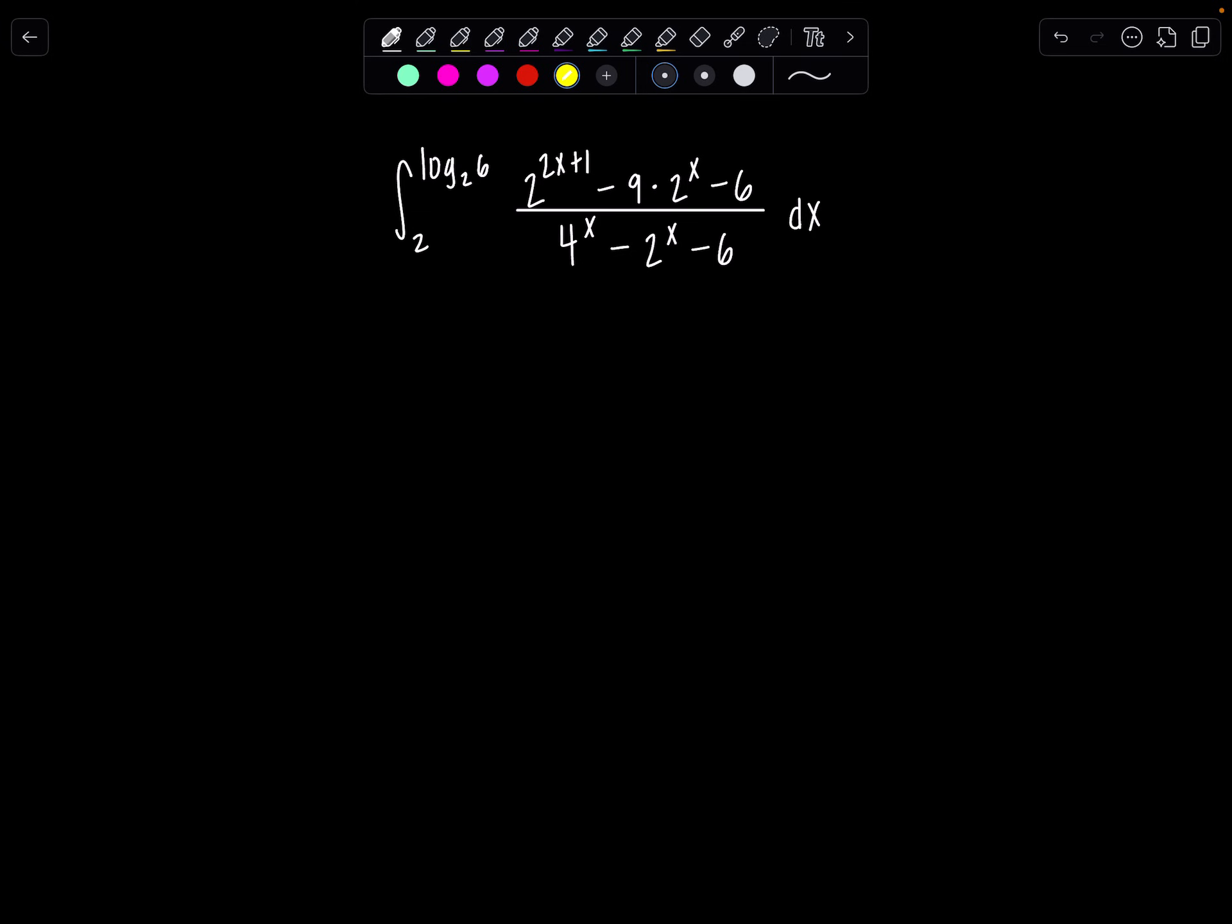Pause the video and try it on your own if you would like. I'm going to jump right in and what popped out at me was repeatedly seeing 2^x, and I know I can write 4^x as (2^2)^x. So I'm thinking we're going to need to make some sort of substitution involving 2^x.